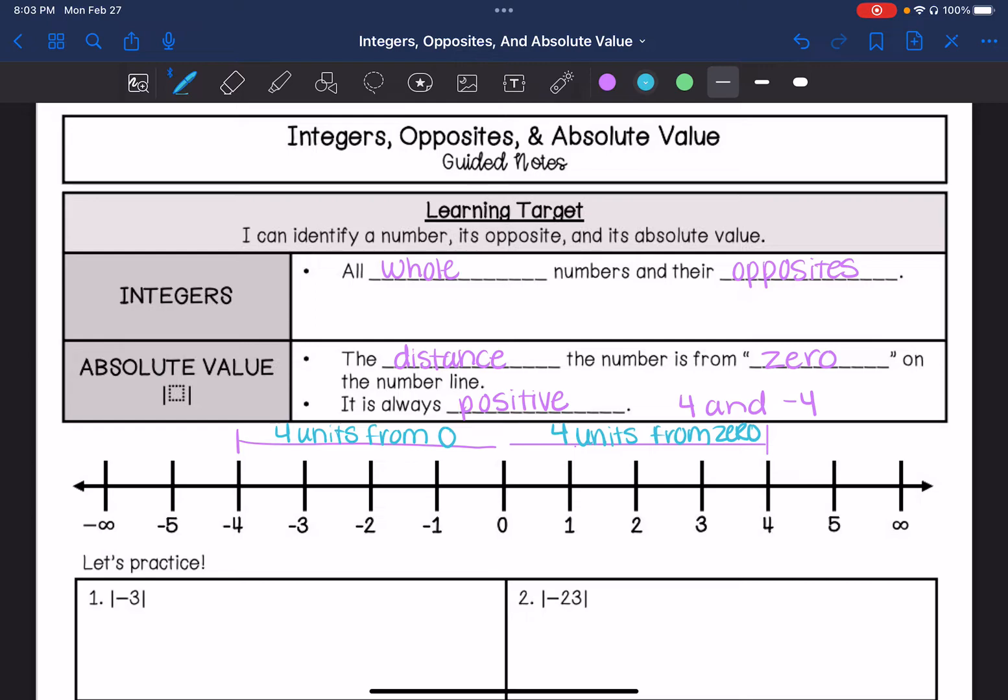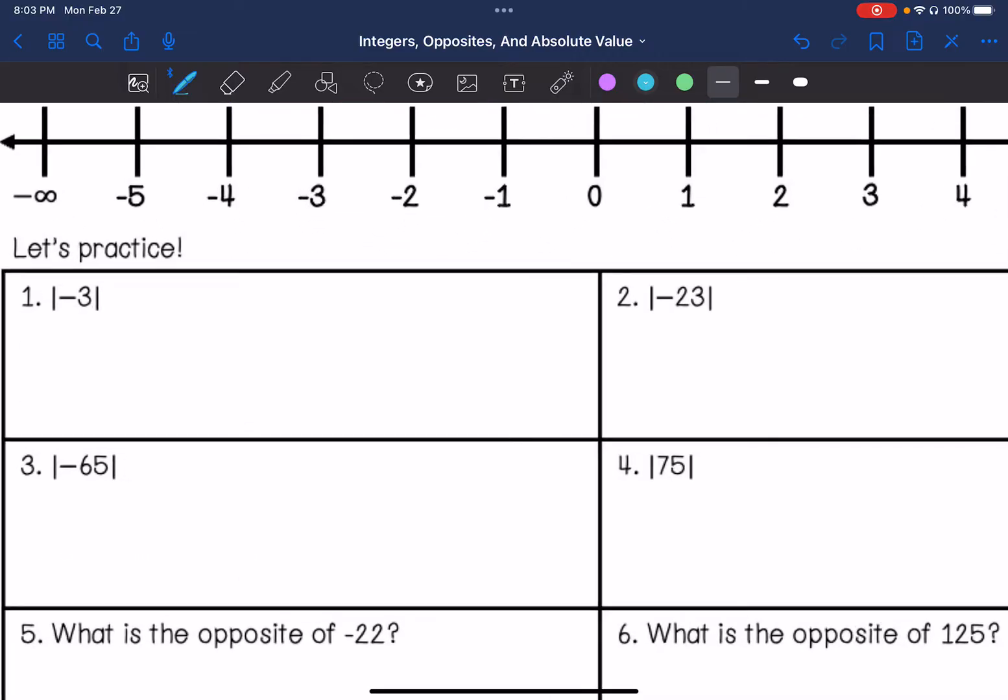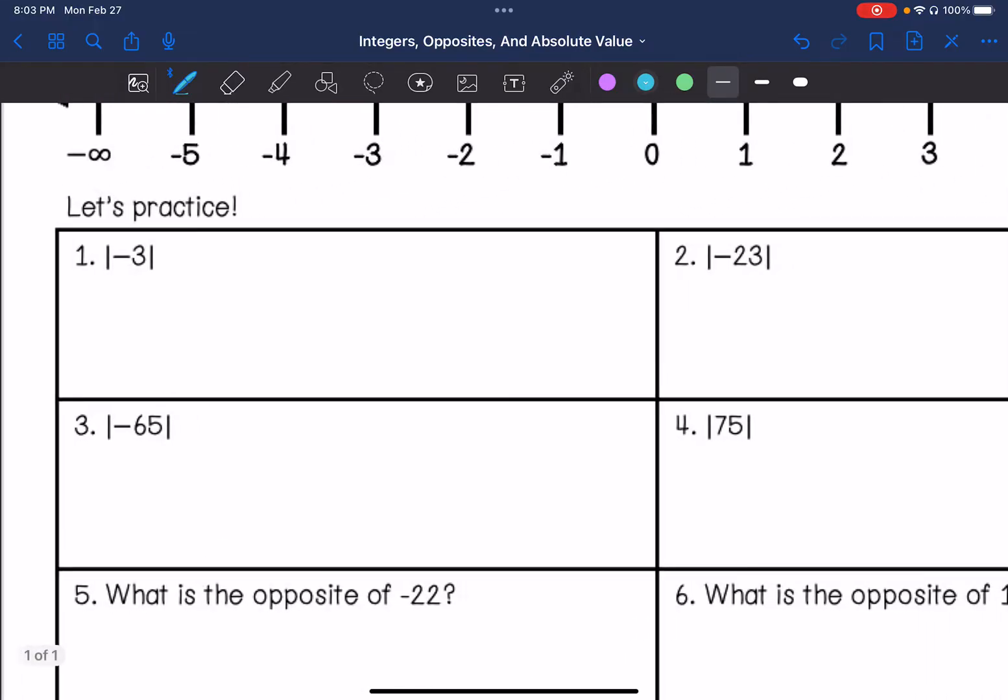All right, so let's practice finding the absolute value of each of these. I'm finding the absolute value of negative 3. The distance it is from zero is going to be 3, so my absolute value is 3. Basically, when it's a negative number, it is the opposite of it. If it's a positive number, then it's just whatever the number is, is the distance from zero.